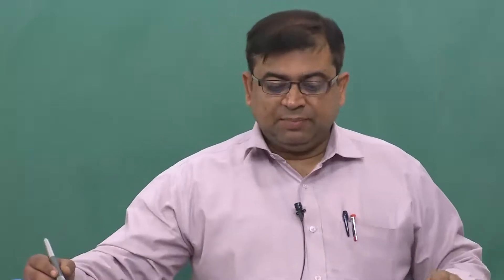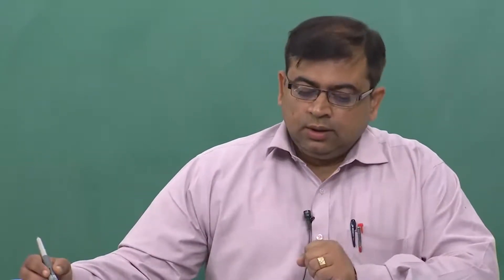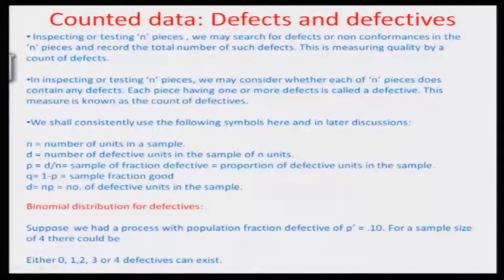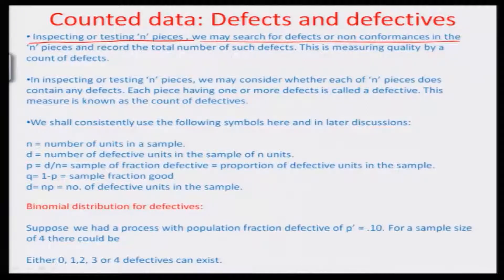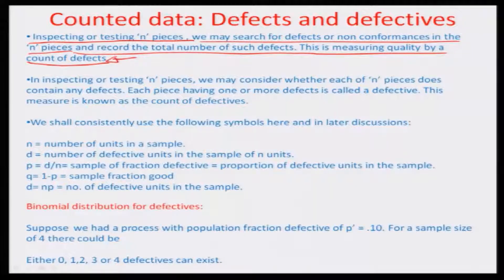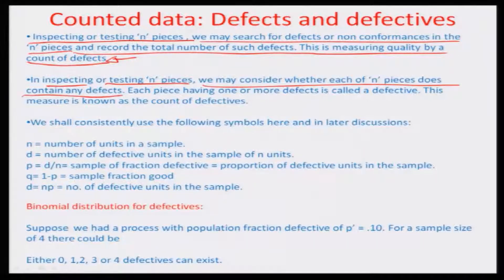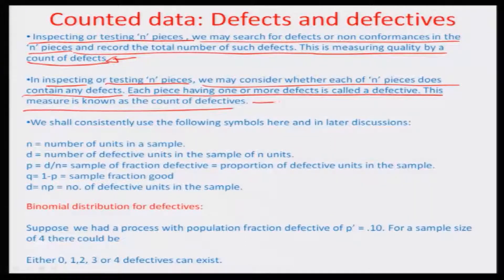The estimation of probability was done in respect of acceptance sampling. In a particular case, we are inspecting about N pieces and may search for defects or non-conformances in N pieces and record the total number of such defects. This is measuring quality by count of defects. In inspecting or testing N pieces, we may consider whether each piece contains any defects. Each piece having one or more defects is called a defective, and this measure is known as a count of defective.